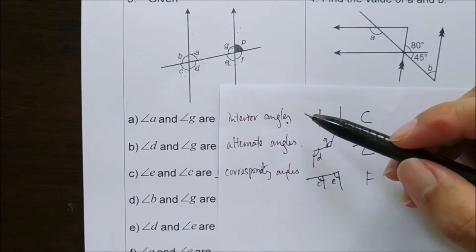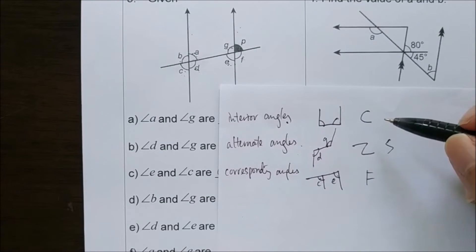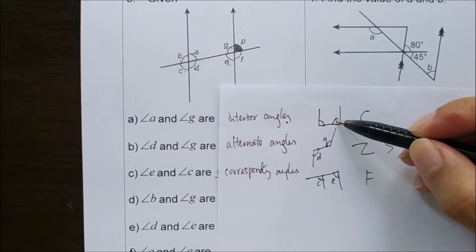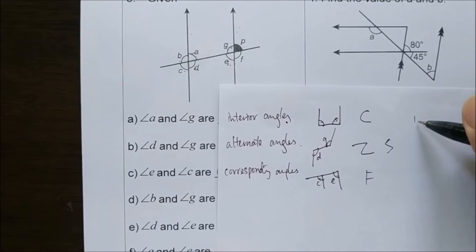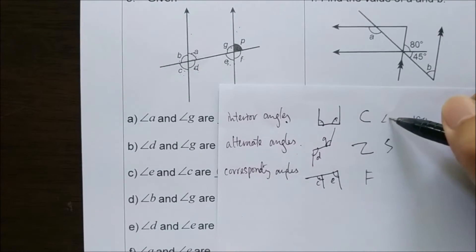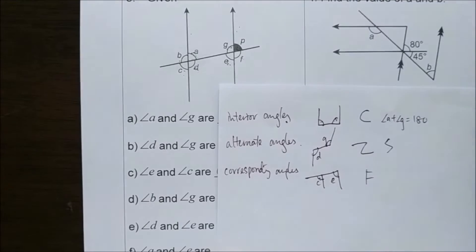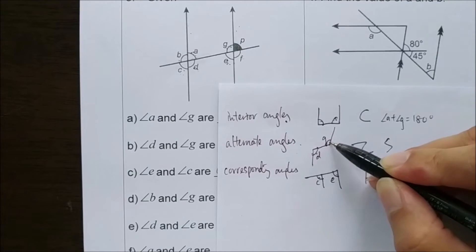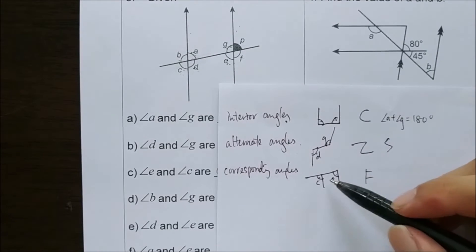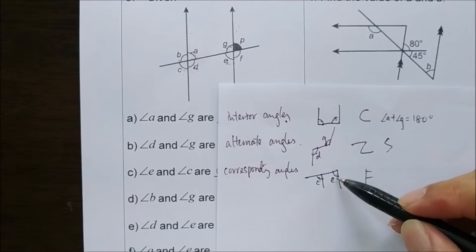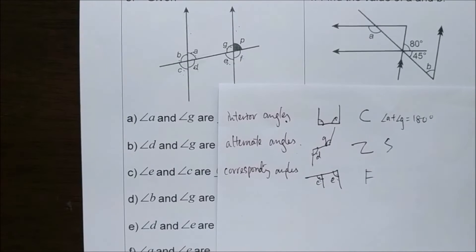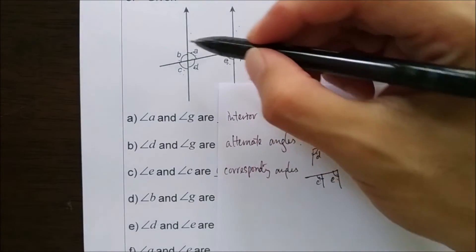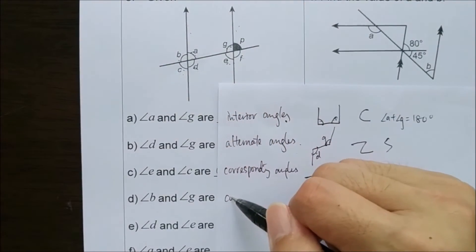We need to identify the angles because if we identify interior angles, we know the total of the two angles equals 180 — for example, angle A plus angle G equals 180 degrees. If we identify alternate angles, we know they have the same value. And if we identify corresponding angles, we also know they have the same value. So B and G are corresponding angles.